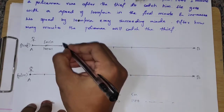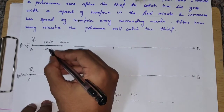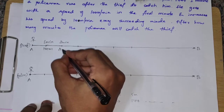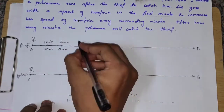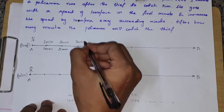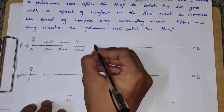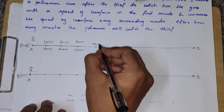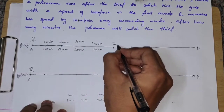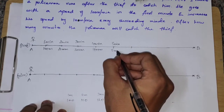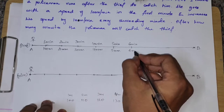In the first minute the thief covers 100 meters. In the second minute another 100, so total is 200 meters. In the third minute, total is 300 meters. In the fourth minute, 400 meters. In the fifth minute, 500 meters. In the sixth minute, 600 meters.